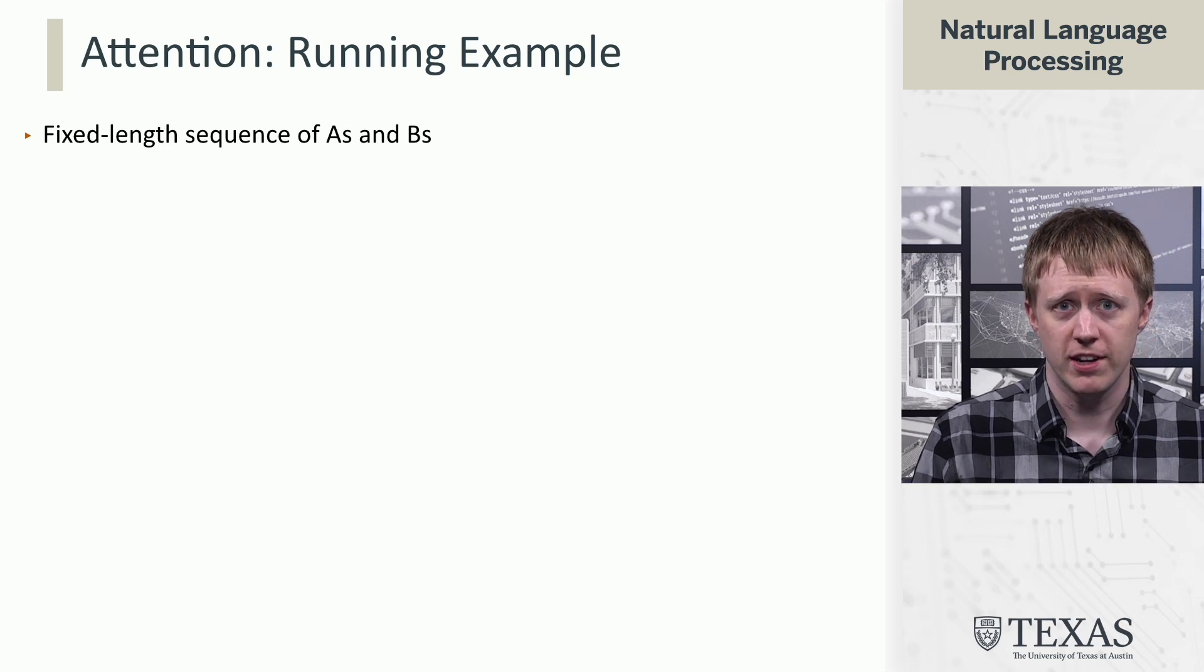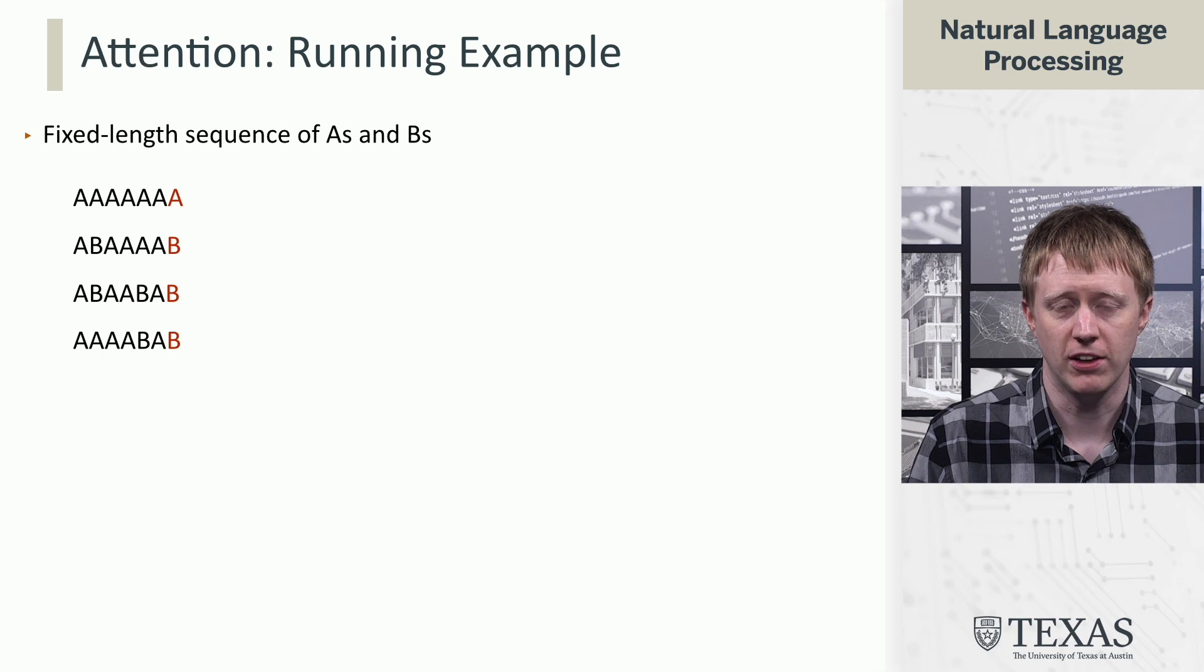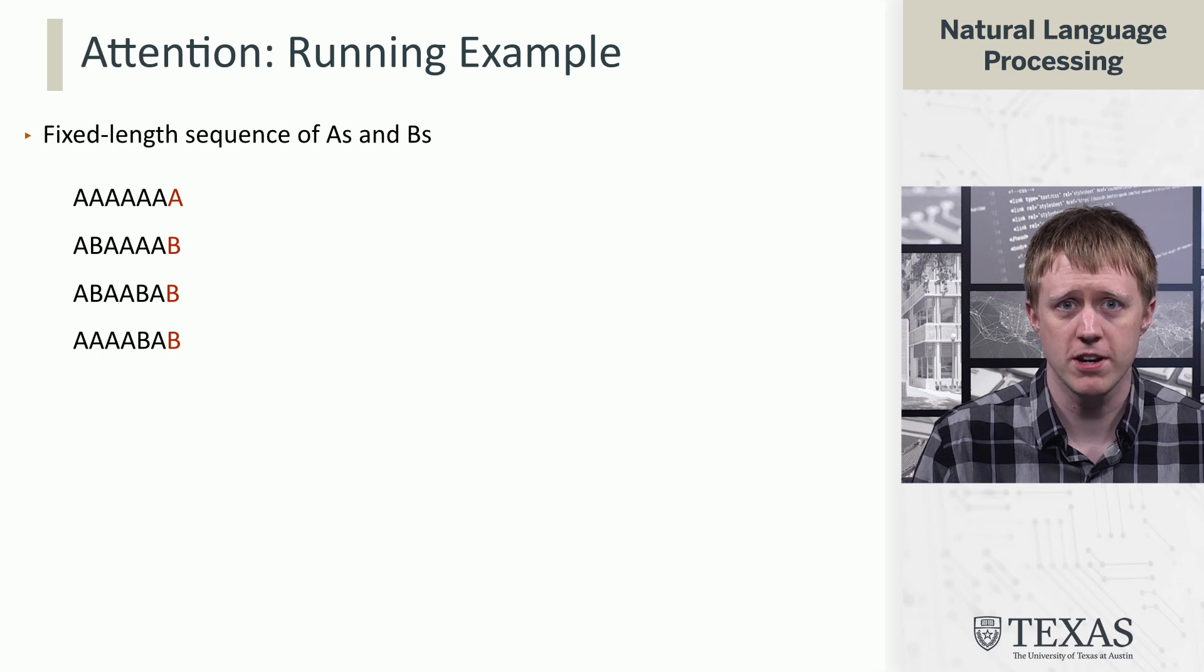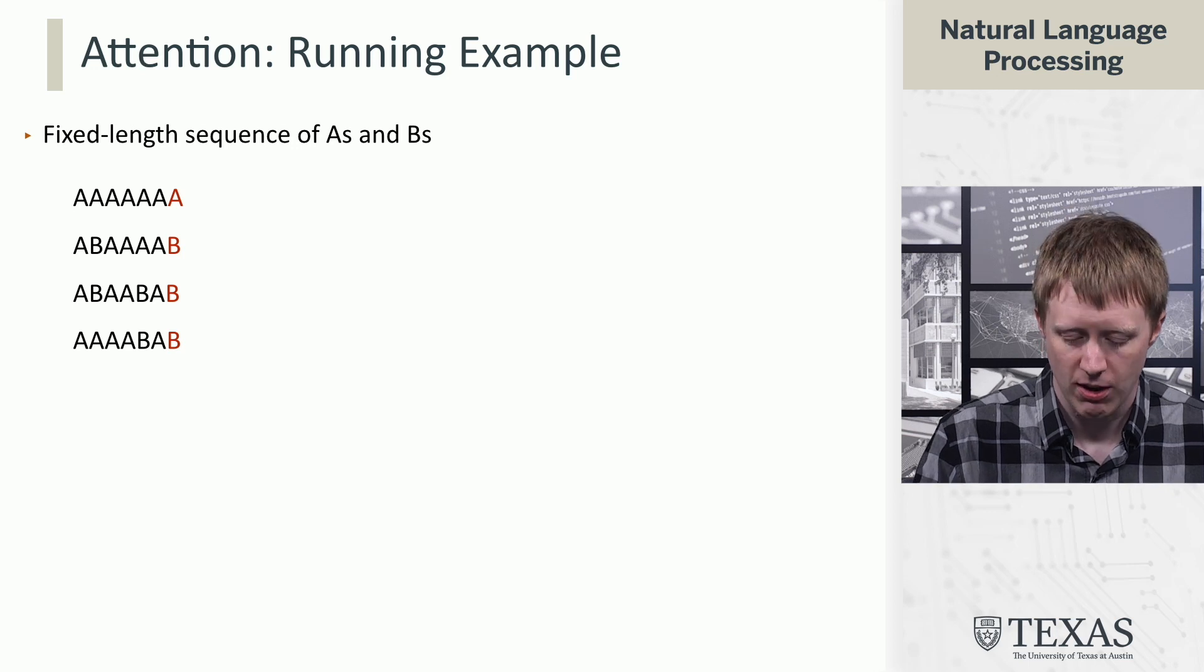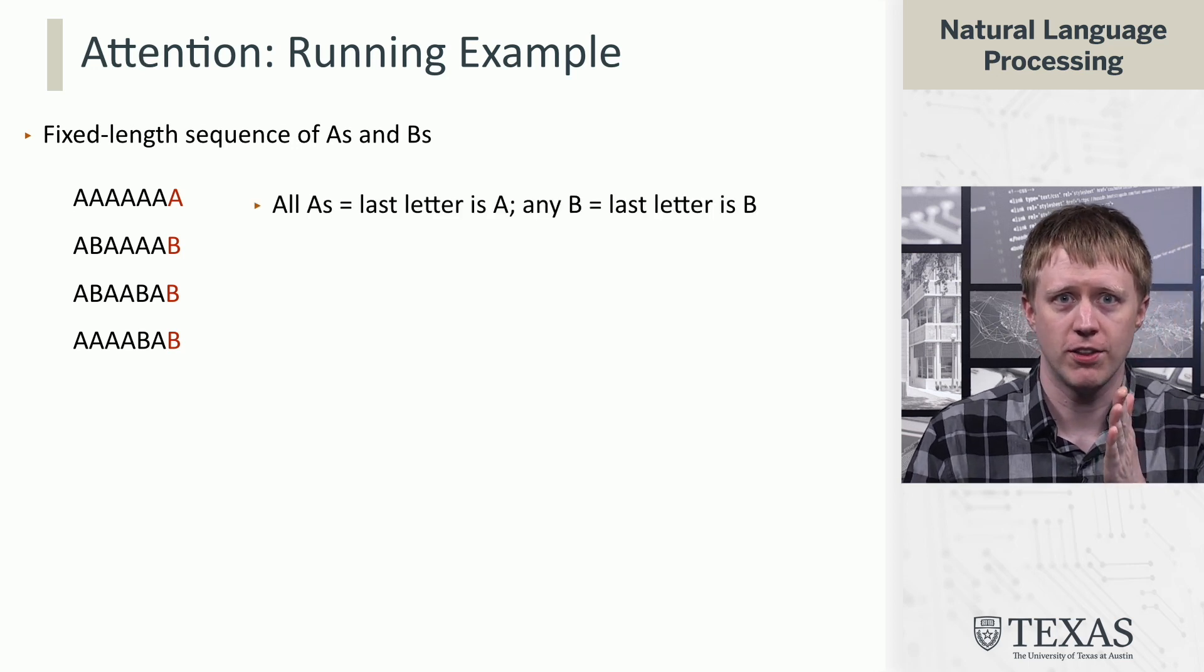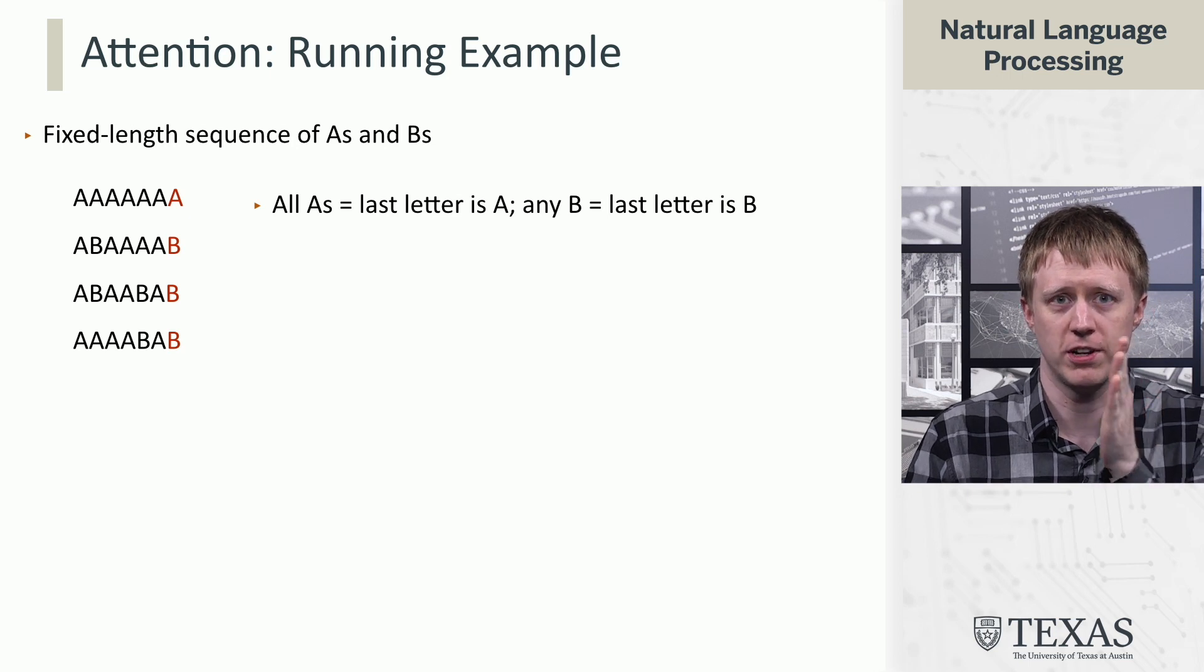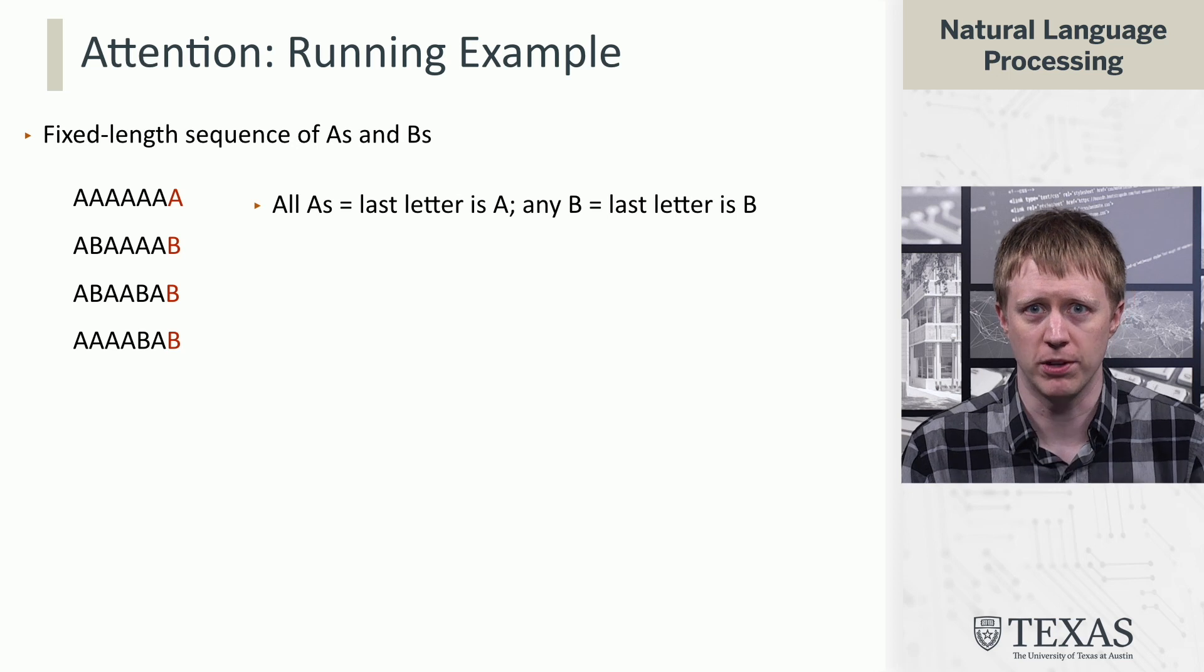So we're going to consider these fixed length sequences of As and Bs. Our goal here is to predict the last letter in this sequence. Now I've constructed these according to the following rule: If it's all As for the first six characters, then the last one is going to be an A. If there's any B anywhere in the sequence, then the last one's going to be a B.